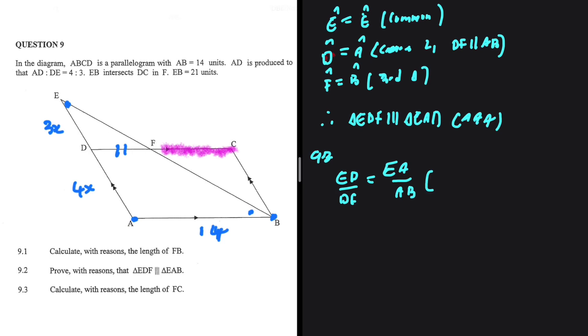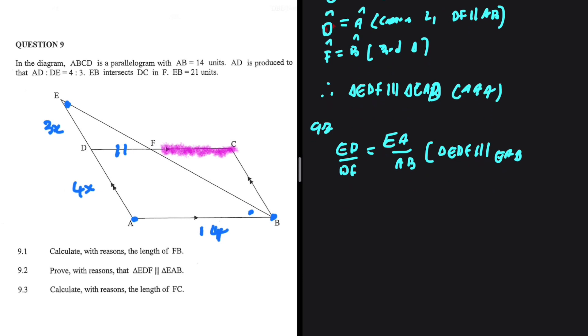What reason can we give? We can say that triangle EDF is similar to triangle EAB and not EAD. So there we go. So ED is 3X. DF is what we are interested in.